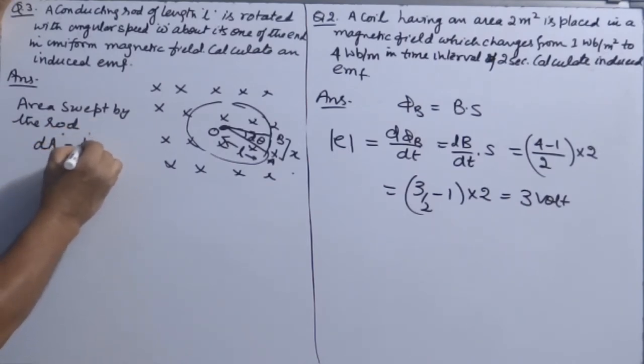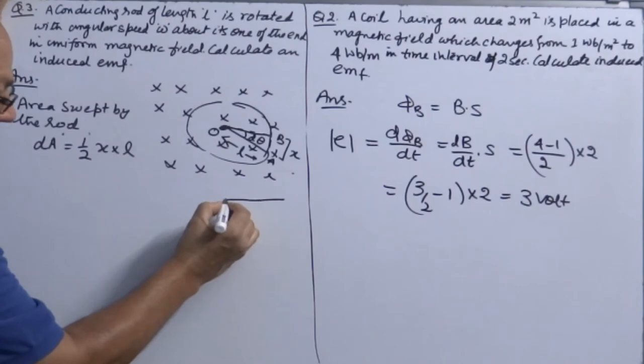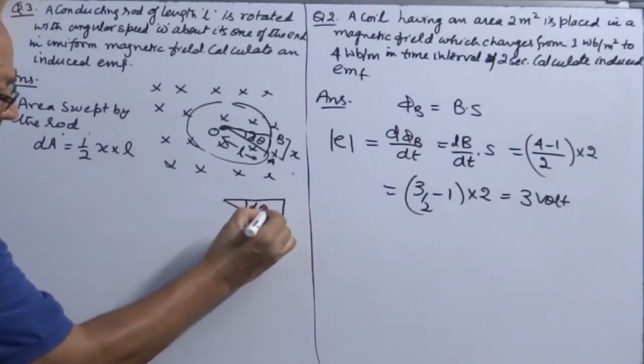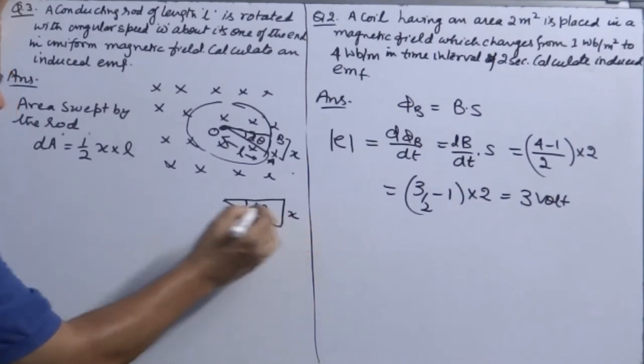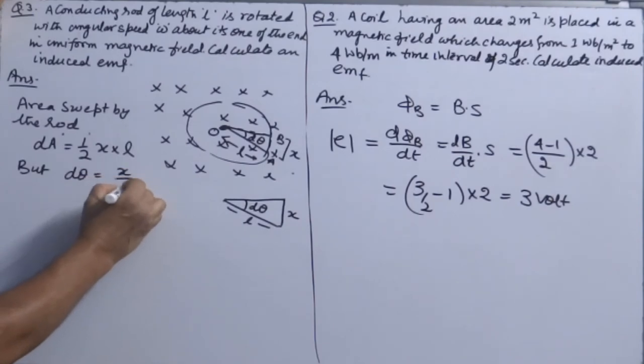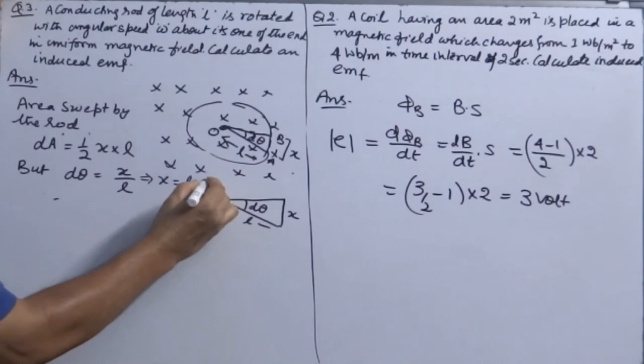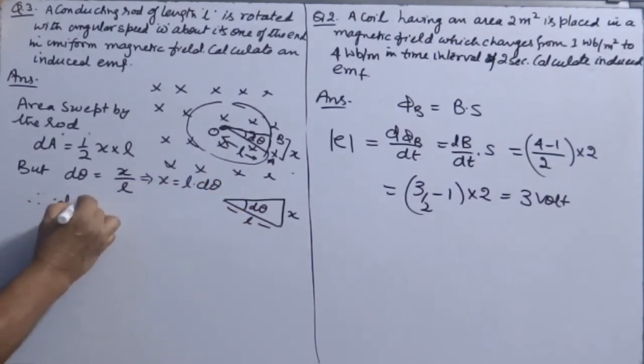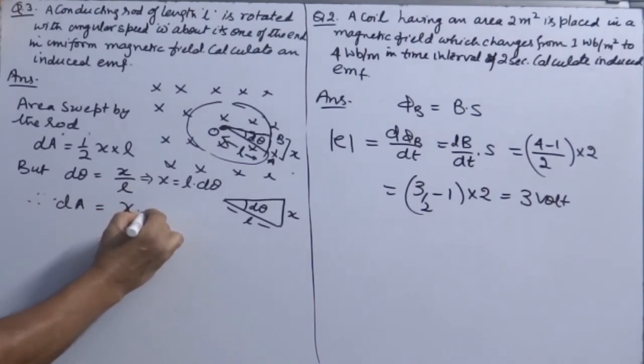So dA is equal to what? Half X into L. I can make this triangle separately here. This is small angle d theta. Length is, this is X. So you can consider X as almost perpendicular. So half length relates one side into perpendicular. Now but d theta by definition is X over L. So this is d theta. X is equal to L d theta. Therefore dA is equal to half L squared d theta.